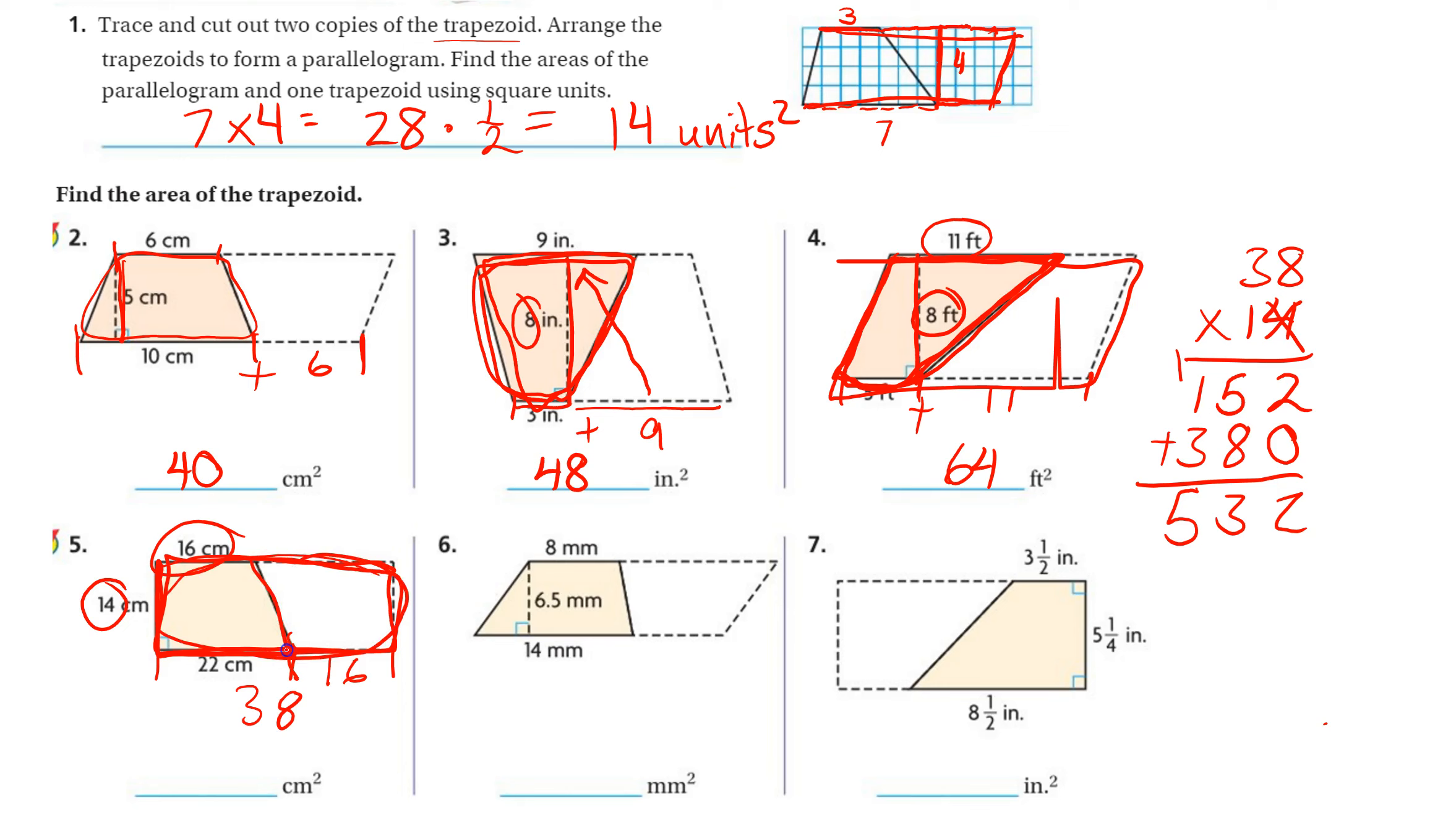Now that's the area for the whole thing. Now to find the area of just this trapezoid, I need to take half of that because the trapezoid constitutes half of it. So I need to multiply this by 1 half or divide by 2. It's the same thing. Half of 500 is 250, half of 30 is 15, half of 2 is 1. So half of all of that would be 266. Again, many, many ways you can work these out.